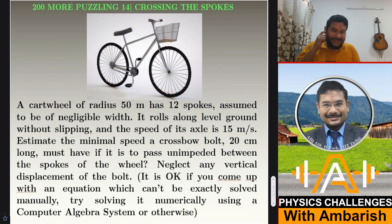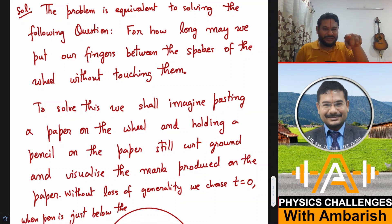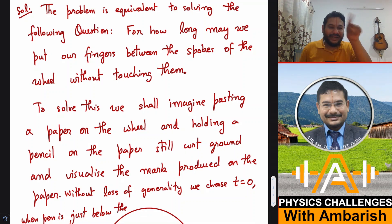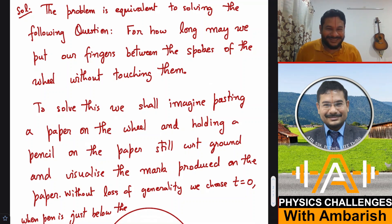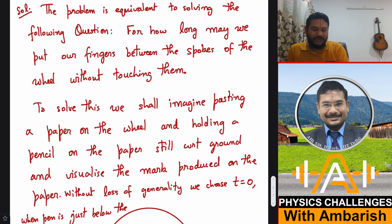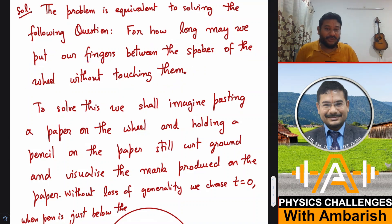Let's get into the analysis. What is the problem equivalent to? Imagine the bicycle wheel is rolling and you are putting your finger inside — not a very good idea, but let's say you do. How long can you keep the finger inside so that it doesn't collide with a spoke? If you can find out that time, then you know the length of bolt that can pass through during that time without a collision. The problem is equivalent to: for how long may we put our finger between the spokes of a wheel without touching them?